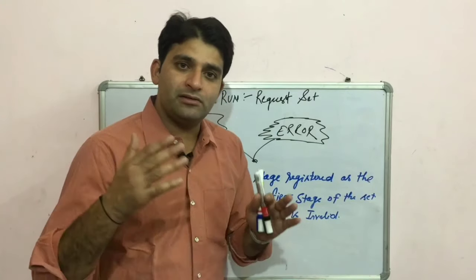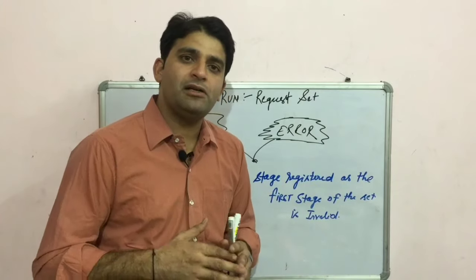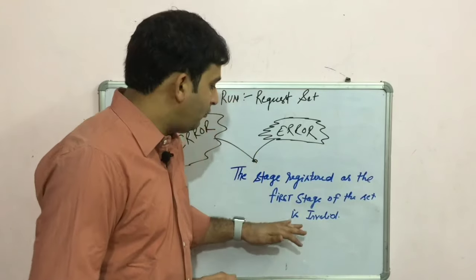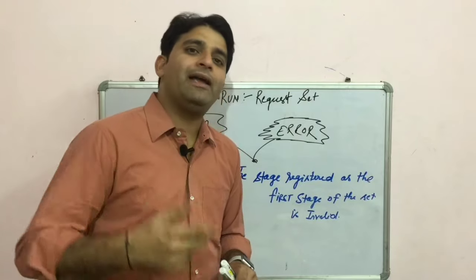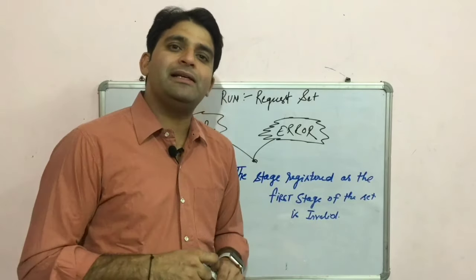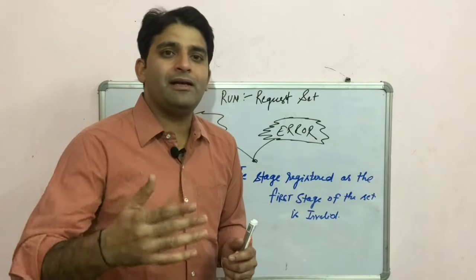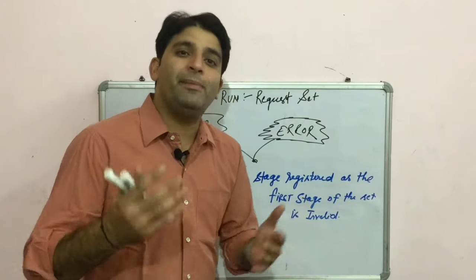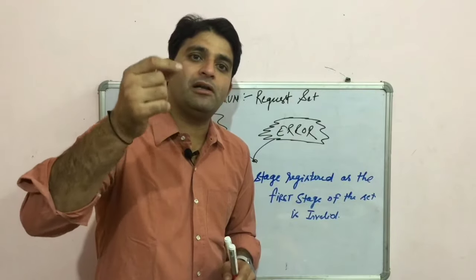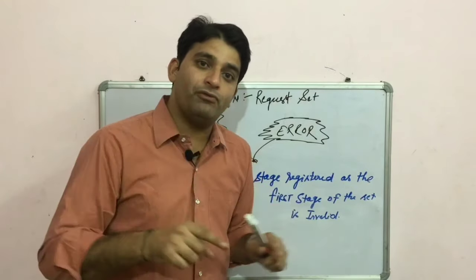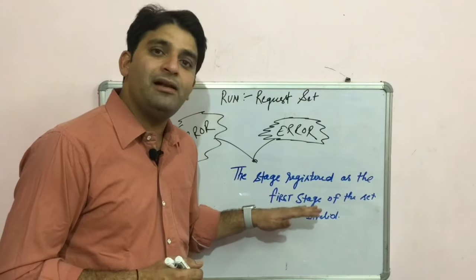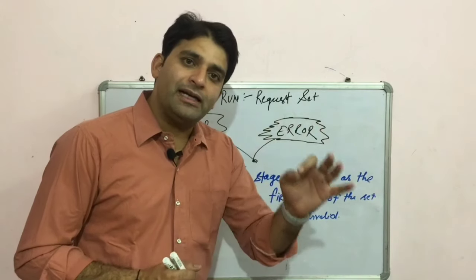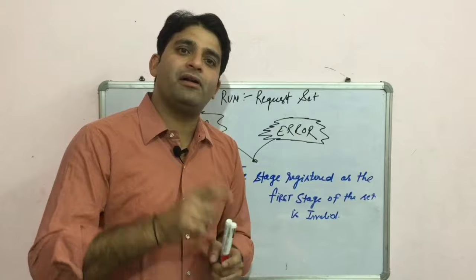Let's see in the lab section so you can clear your concept. But before going to the lab section, I will tell you why this error comes. Whenever we define our request set there are multiple stages. From where does our request set start reading a concurrent program? Basically, we missed out that particular request name in our staging window, which causes this error. To resolve it, you have to define your stages properly and give the first stage from where our request will start reading.